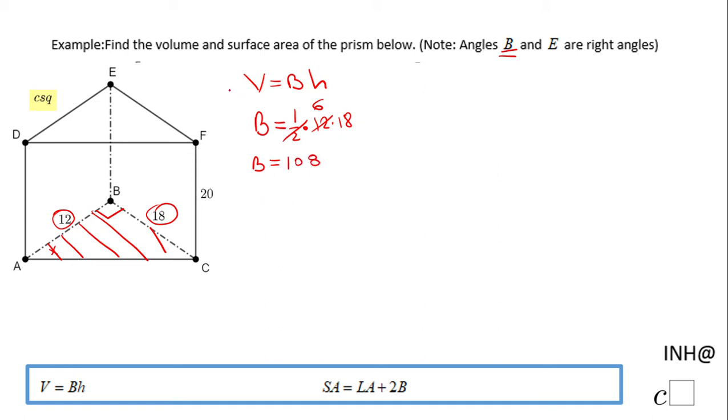Now, we can go back to the original formula, which is 108 times the height of this prism, which is this 20, and the final answer will be 2,160 cubic units.